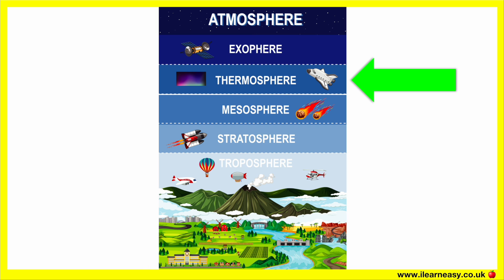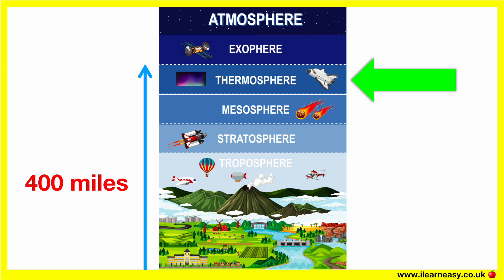The thermosphere is located about 400 miles above the Earth's surface. The air in this layer is very thin and the temperature can become very hot. The temperature increases with altitude, due to the very low density of molecules found in this layer. This layer is both cloud and water vapour free. The thermosphere's lowest layer contains the ionosphere, where most atoms are ionised and electrical charge is found. The thermosphere is also where the aurora occurs, commonly known as the southern and northern lights.